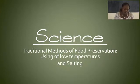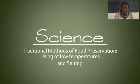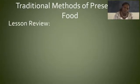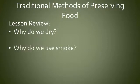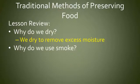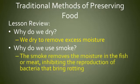We will start by using low temperatures. But before we go to use of low temperatures, let's remind ourselves what we said about drying and smoking. We dry our food so as to remove excess moisture. When smoke is passed over meat or fish, it removes the moisture that might be in the fish or the meat, hence inhibiting the reproduction of the bacteria that bring about rotting or that may cause the food to go bad.